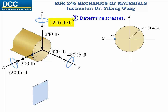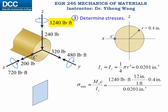For the bending moment about the z-axis, point C is at the edge furthest away from the z-axis, so the bending stress is maximum, determined by the flexure formula. Iz is the moment of inertia about the z-axis; since the cross section is circular, Iz equals Ix, both determined by the same equation. Don't forget to convert 1240 pound-foot into pound-inch. We determine sigma max and mark it on the element — it is a compressive normal stress of 296 ksi.